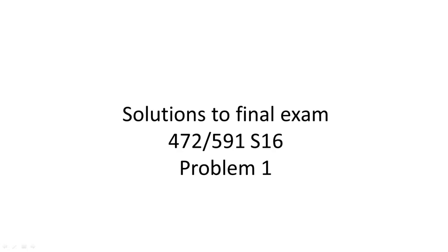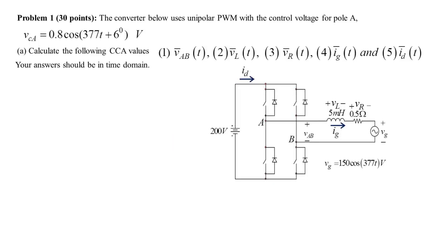This video covers the solutions to problem one of the posted sample final exam from Spring 16. Problem one is on a DC-AC unipolar PWM converter with a DC voltage of 200 volts and a grid voltage.